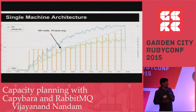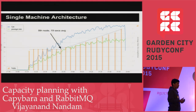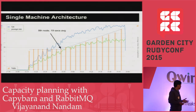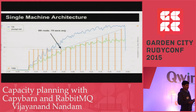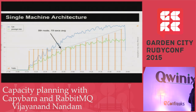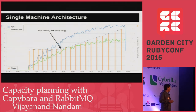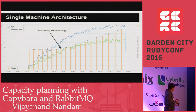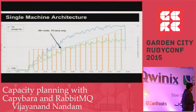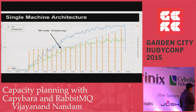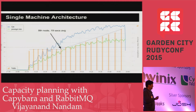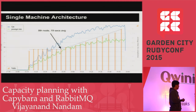The initial deployment architecture is a single machine, with Apache, delayed jobs, MySQL, and Passenger — everything in the same box. We collect data on the CPU usage of each process. The average sign-up completion time is around 90 seconds, and we have eight concurrent Capybara nodes running. After adding the ninth node, the total sign-up completion time goes on increasing, so eight nodes is the optimal point.